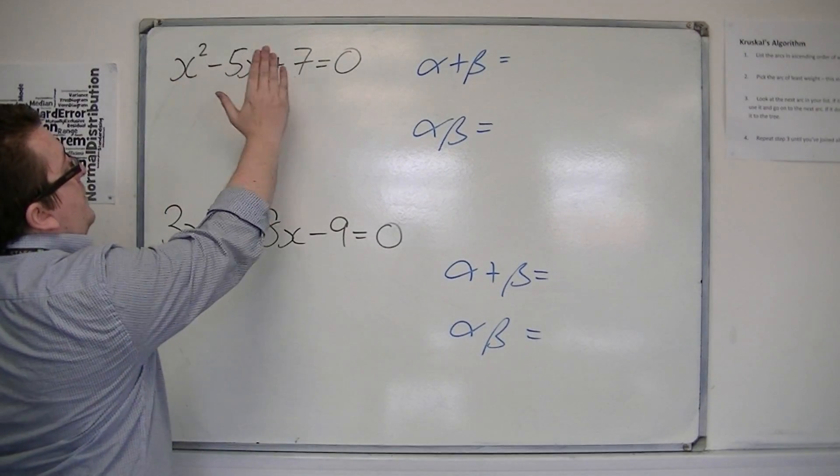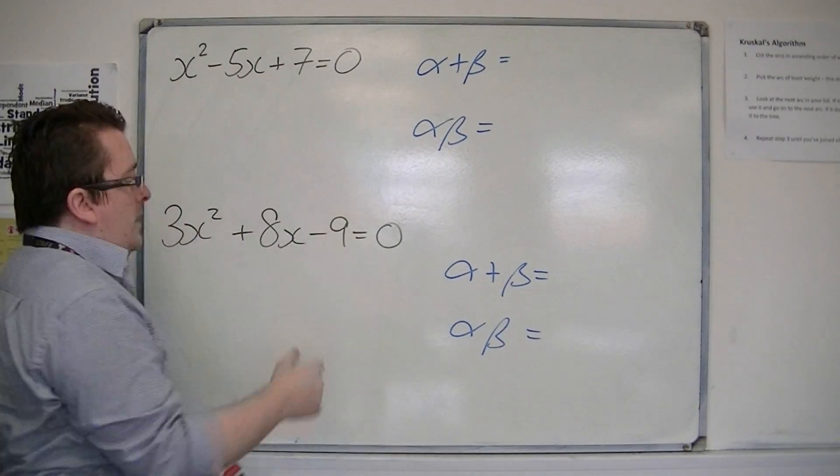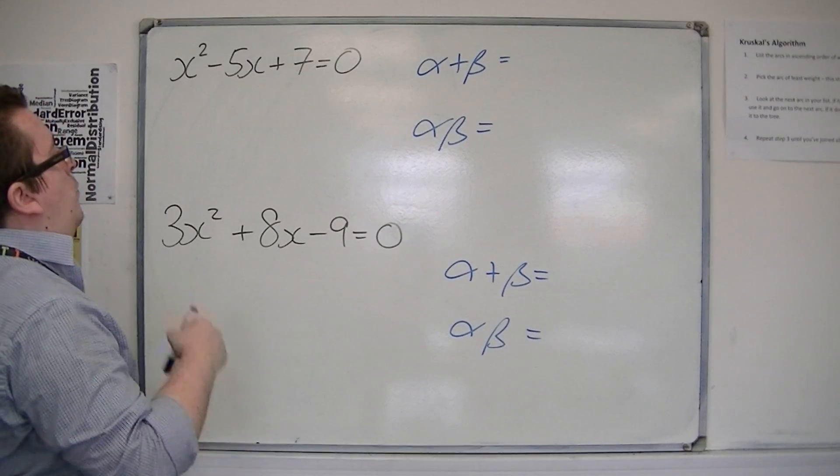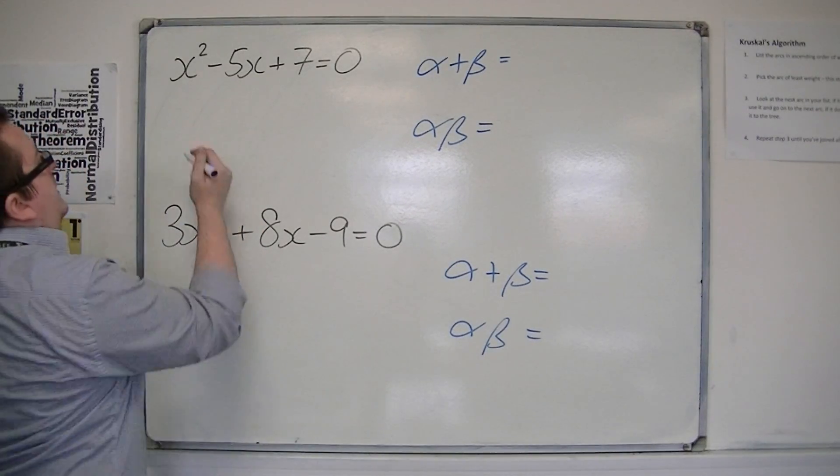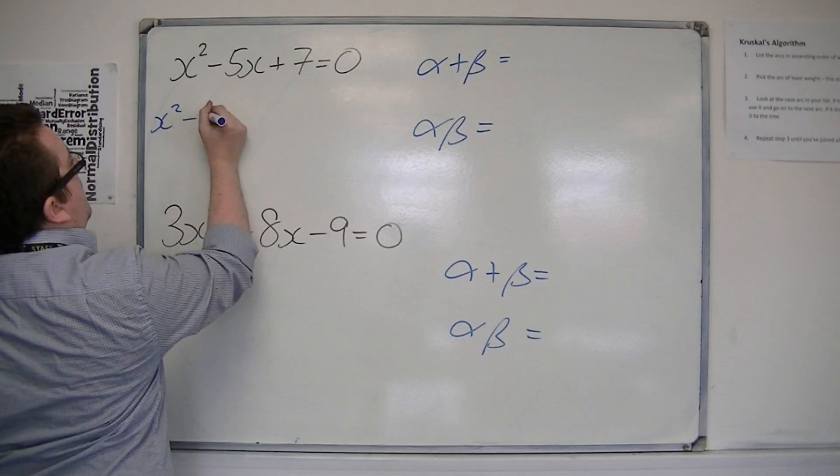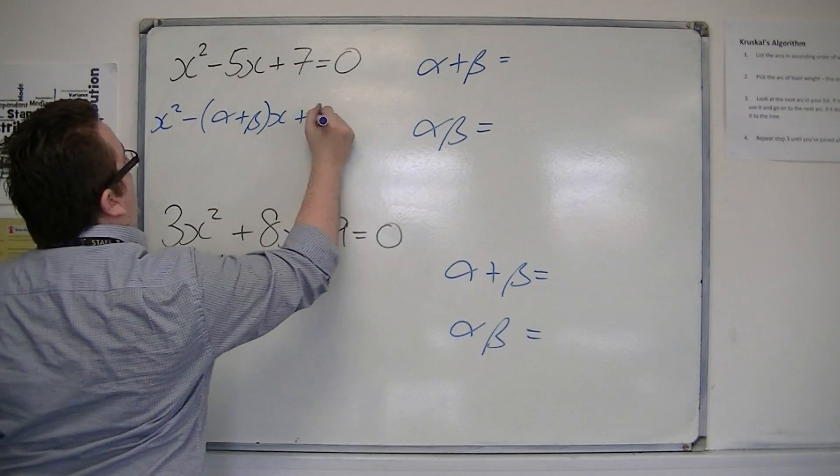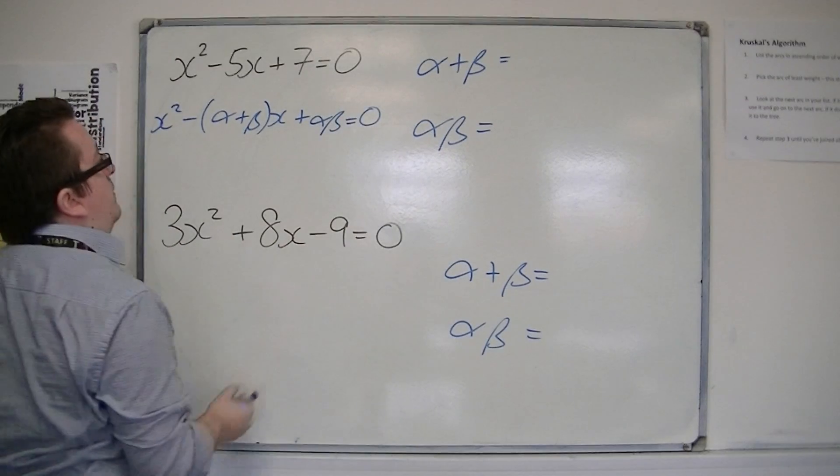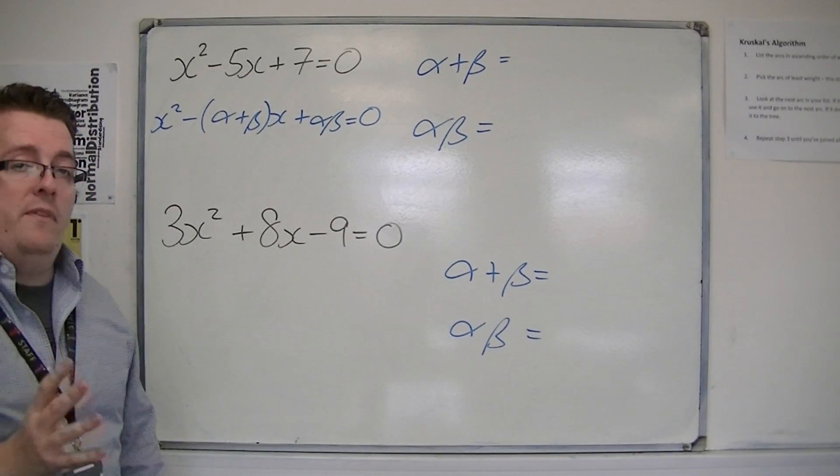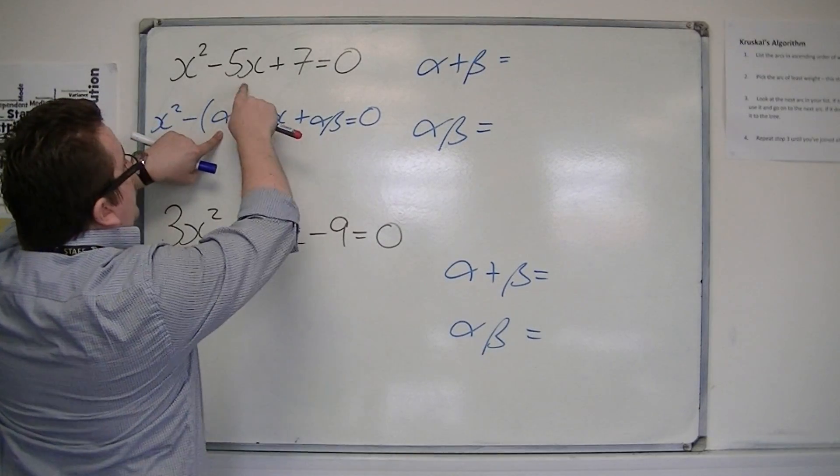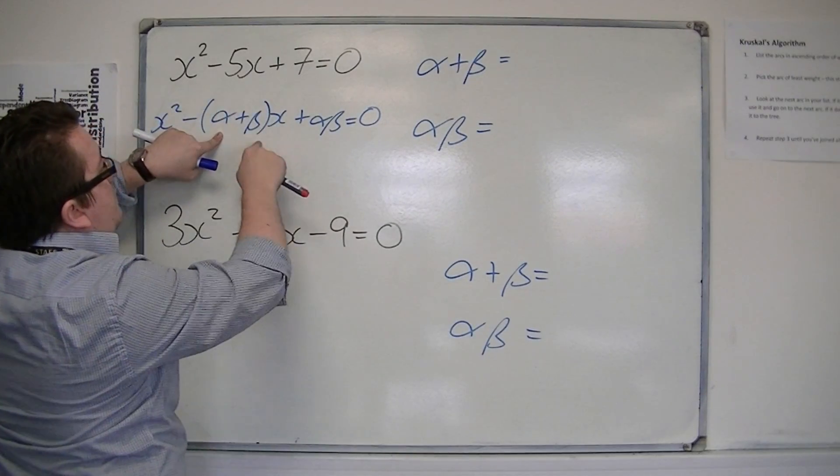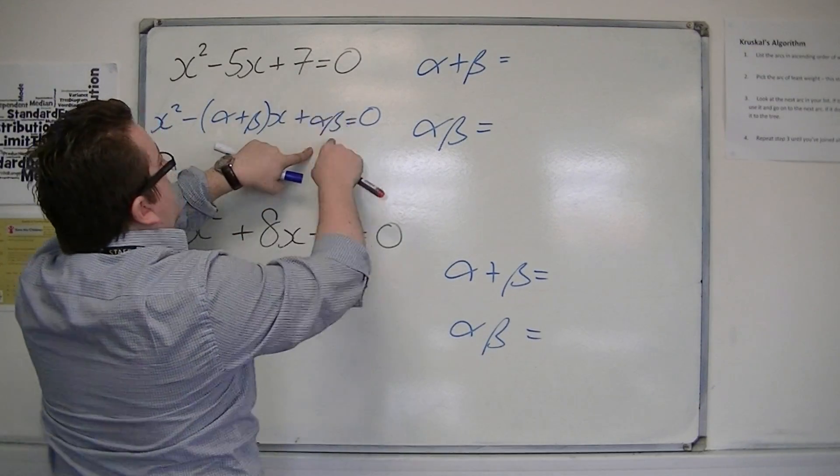So x squared minus 5x plus 7 equals 0. In the previous video, when I expanded x minus alpha times x minus beta, you get x squared minus alpha plus beta times x plus alpha beta equals 0. From that, it's very easy to identify that alpha plus beta must be 5 and alpha beta must be 7.